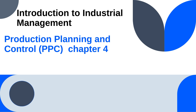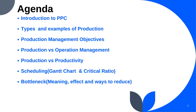Hello guys, welcome to MacOutSmashers. Today we discuss Chapter 4 in industrial management. The name of the chapter is Production Planning and Control (PPC). In this chapter, the agenda topics include: introduction to PPC, types and examples of production management, objectives, differences between production and operational management, production and productivity, scheduling, Gantt chart, critical ratio scheduling, and bottleneck meaning, effects, and ways to reduce.